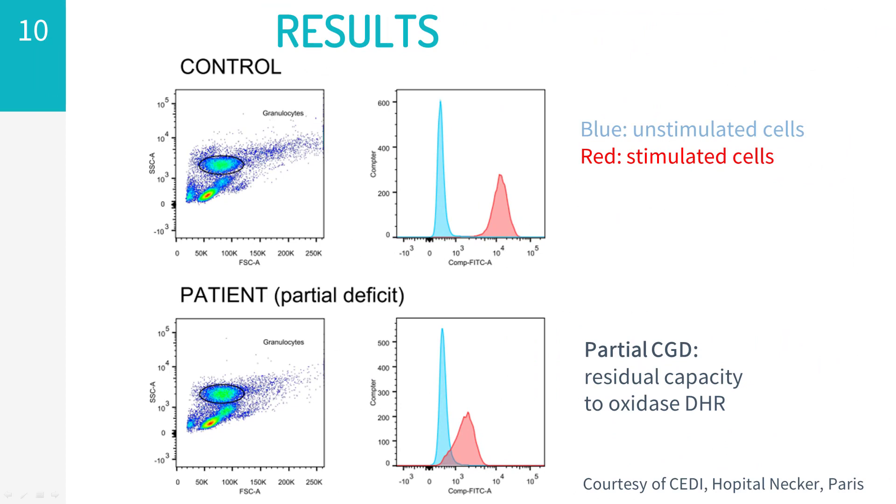Some patients with chronic granulomatous disease have a partial rather than a complete deficit. In this case, cells display some residual capacity to oxidize DHR. The recognition of these cases is important since residual activity may have an impact on prognosis. Another cause for a reduction in the percentage of DHR positive cells could be neutrophil dysfunction secondary to the use of steroids or other conditions. In this case, the findings are usually not as abnormal as in CGD patients and normalize upon resolution of such conditions or removal of the secondary cause.